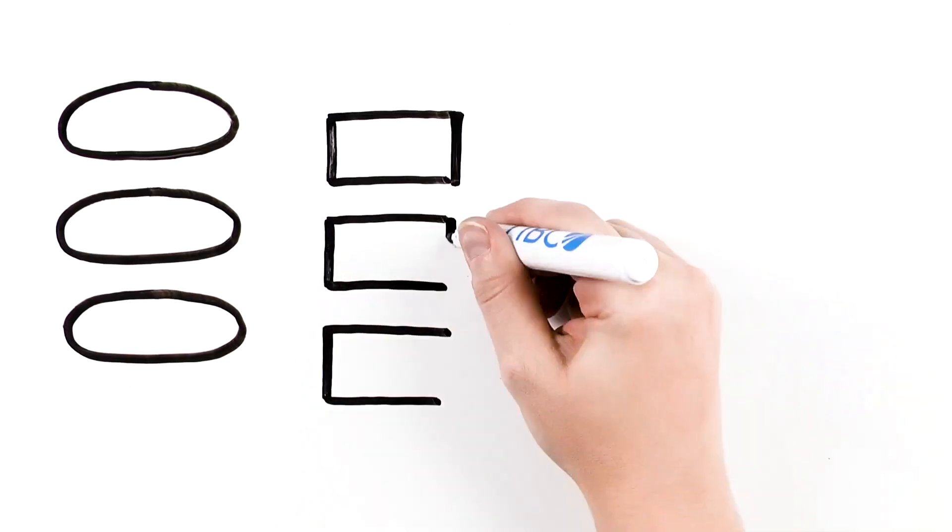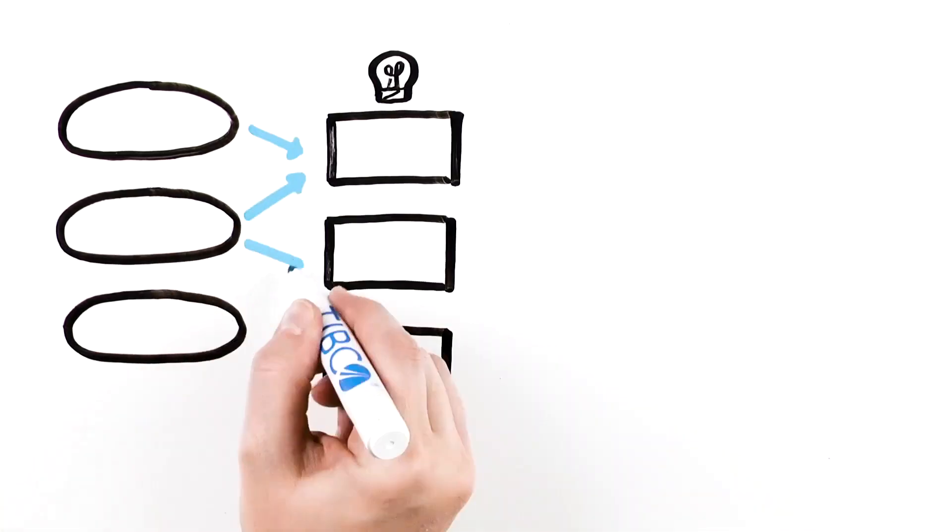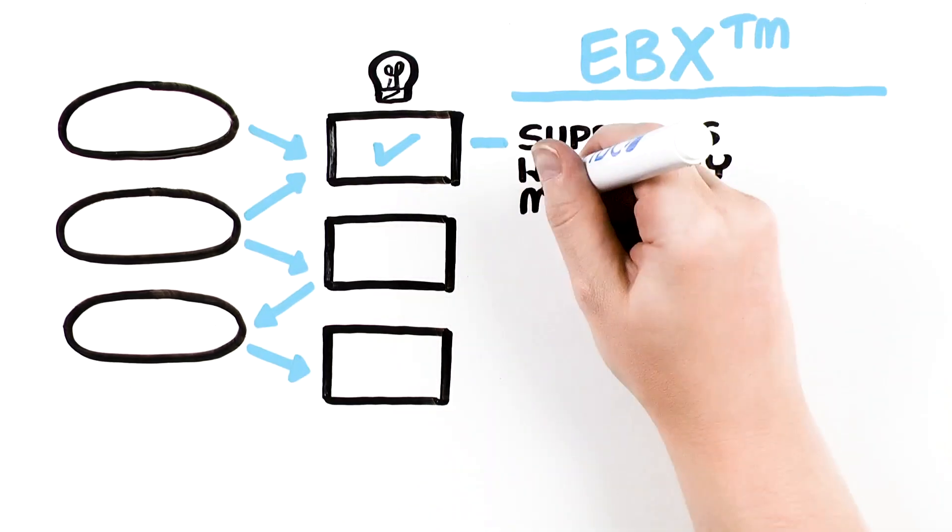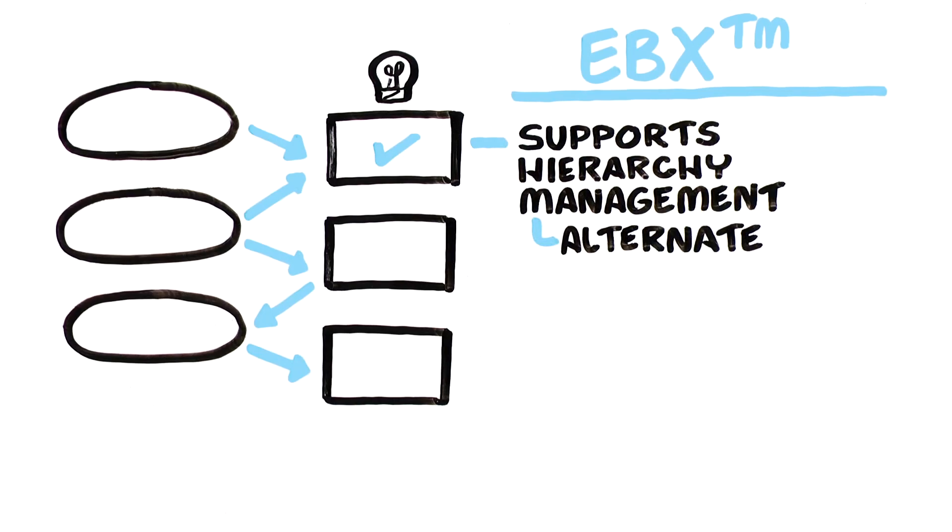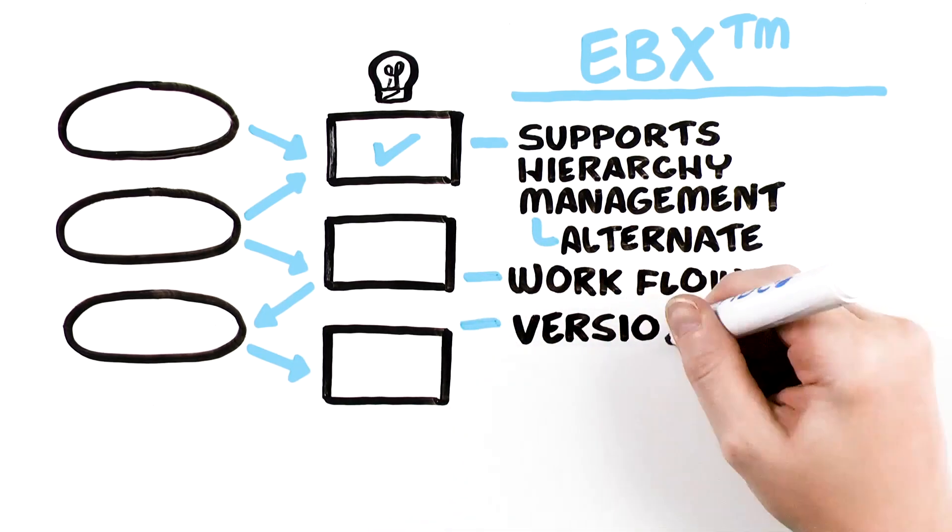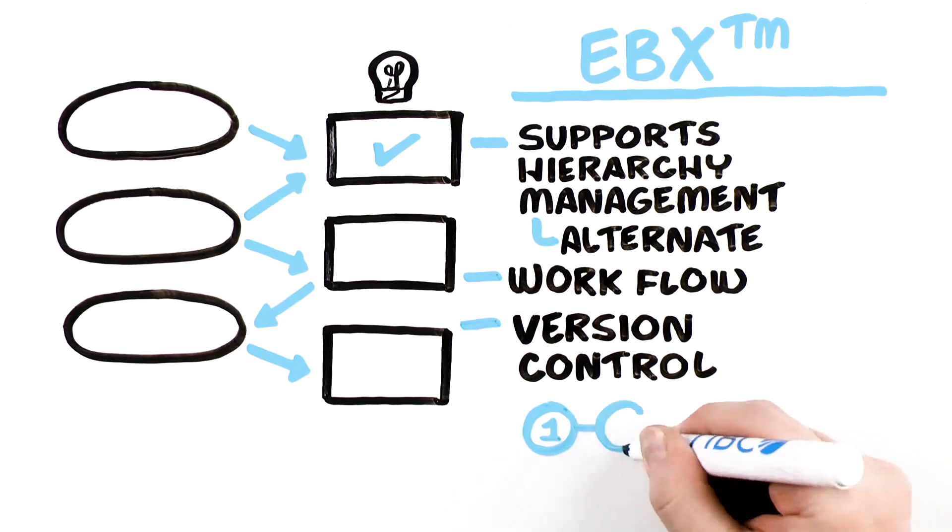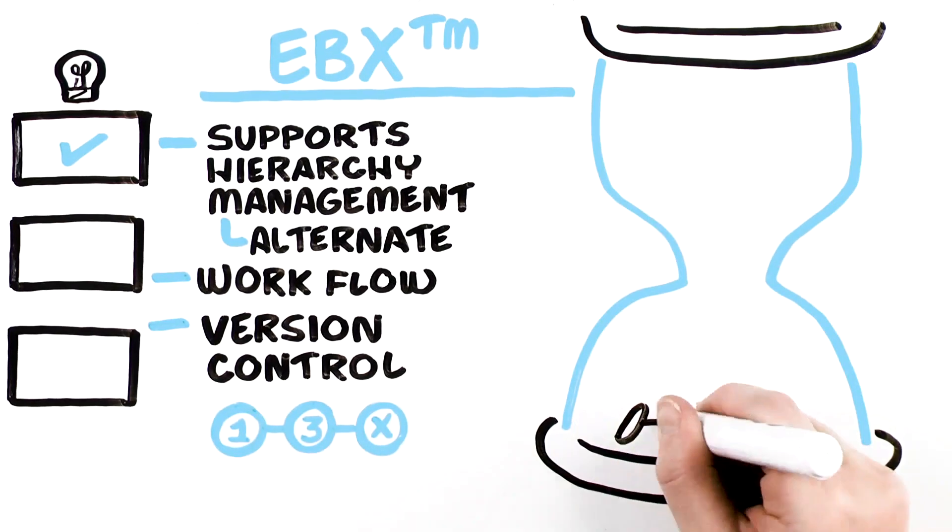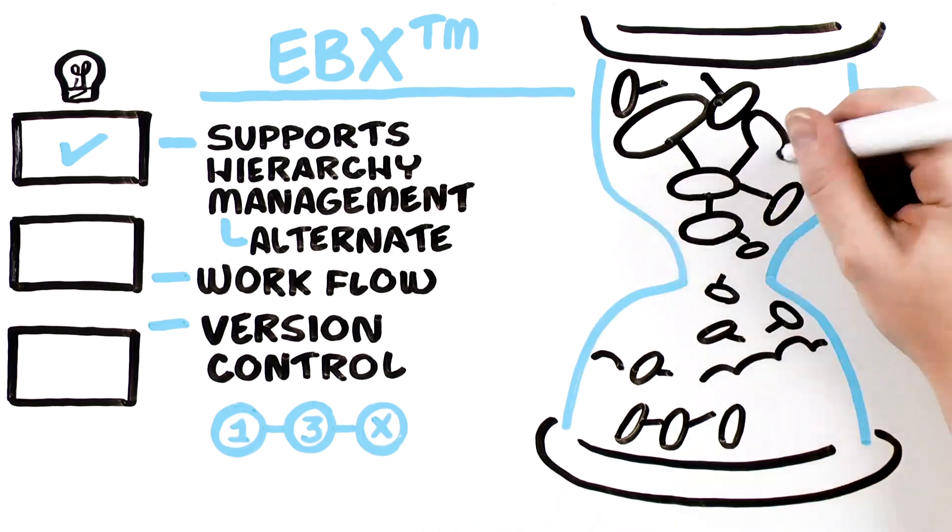That is why we include data modeling in our solution to define what it is to be mastered and its relationships. EBX also supports hierarchy management, which includes alternate hierarchy management, workflow, and version control with access to past, present, and future versions of master data. It also gives you the ability to create relationships between time periods of master data.